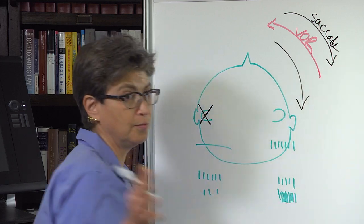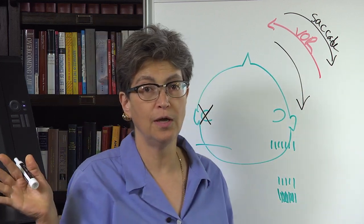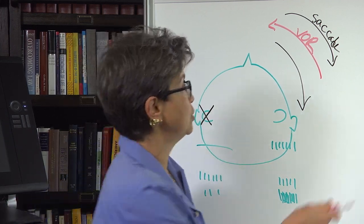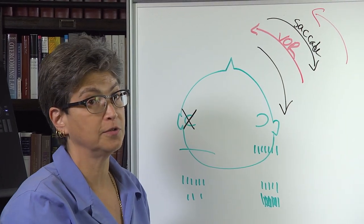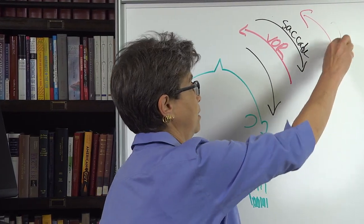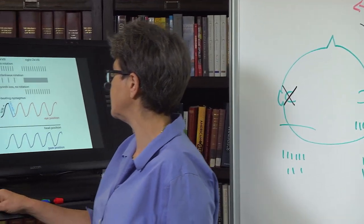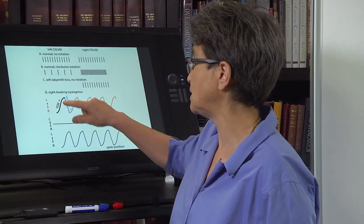Okay. So now you're back over here. You're back looking over here. And now you still have this uneven input. So you still think that you're rotating to the right. So you make a VOR again to the left and that's followed by a saccade and so on and so forth. So what does that look like? That is, that's a nystagmus.